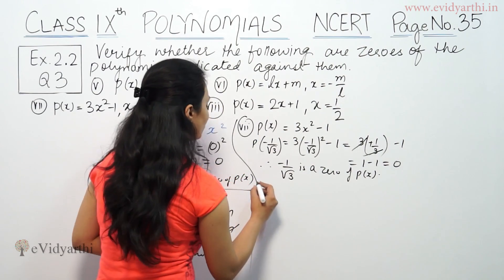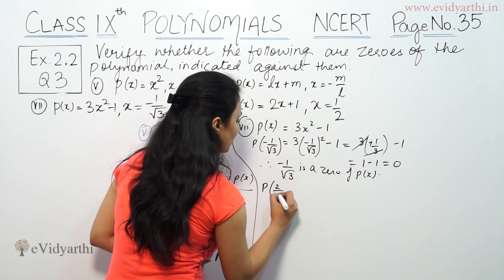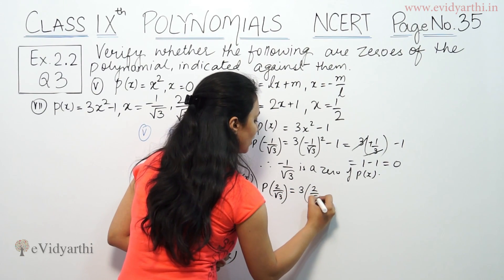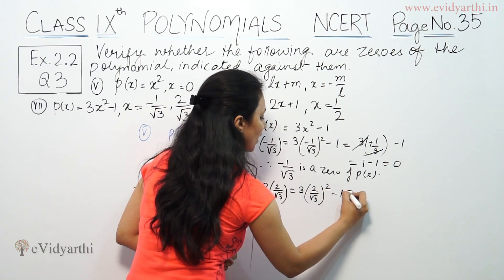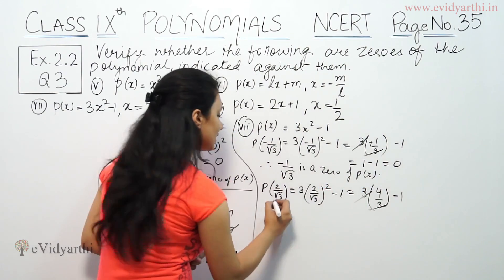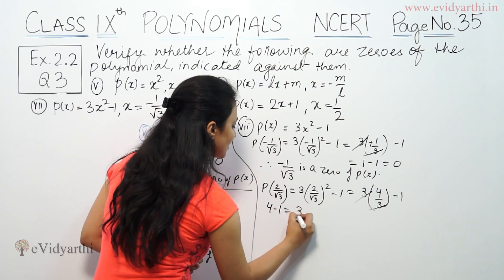Now we will check the other value of 1/√3. So P(1/√3) equals, that means 4/3 minus 1. If we calculate, so 4 minus 3 is 1.